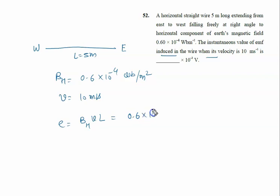0.6 × 10^-4 × velocity 10 meters per second × length 5. We calculate: 10 cancels, 6 × 5 = 30 × 10^-4. We need to write the answer in 10^-3 format, so it becomes 3 × 10^-3.